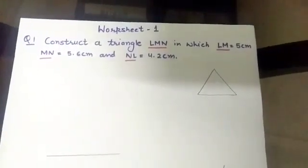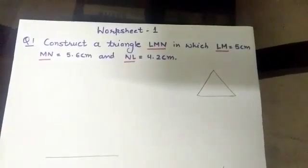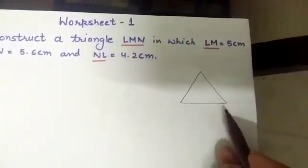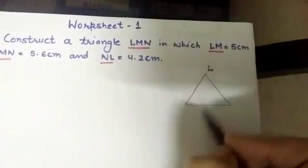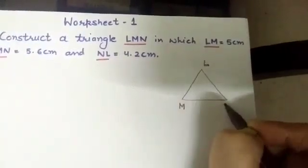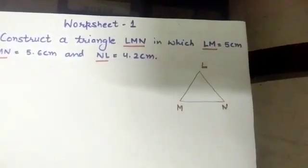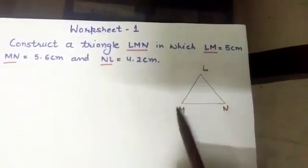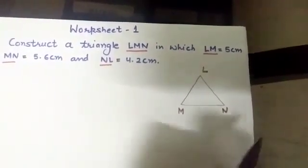First of all, we are going to draw its rough sketch. What rough sketch is? As I have drawn one triangle here roughly, I am going to write the name of the triangle which I have to construct LMN. It's your wish which vertex you want to take on which side. You can take M, L, N, whatever. It's up to you.